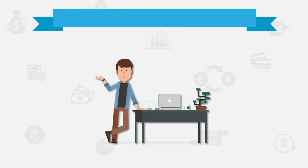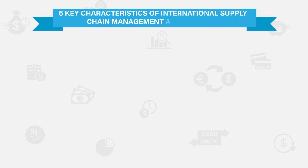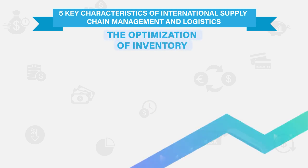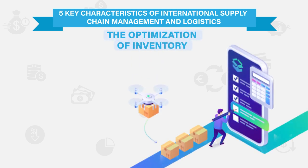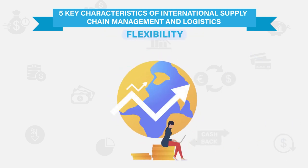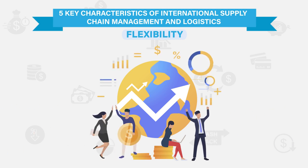Let us discuss the five key characteristics of international supply chain management and logistics. Number one: the optimisation of inventory — making sure that the ideal amounts are available at all times. Number two: flexibility, as the supply chain is capable of adapting to changes in the market and other factors that may influence it.